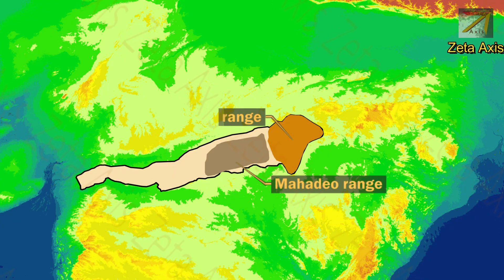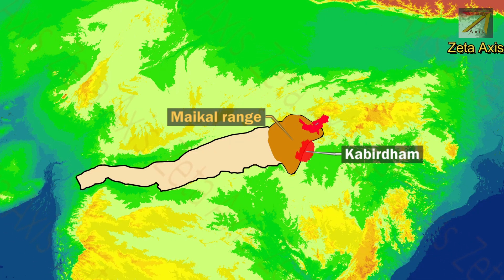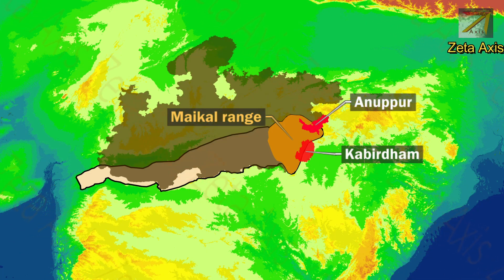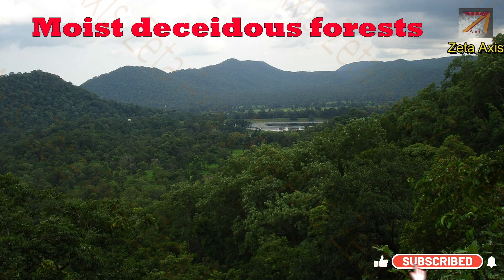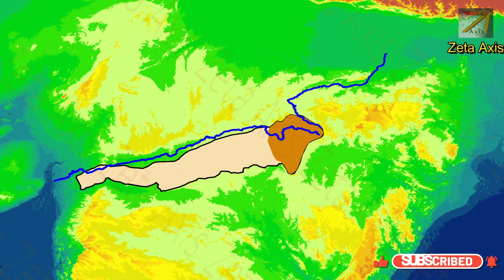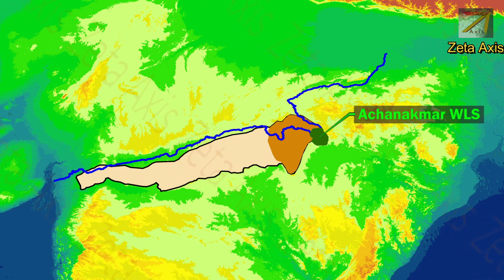The next important sub-range of Satpura mountains is Maikal hills, which form the easternmost part of Satpura ranges. The Maikal hills mainly run through Kabirdham district of Chhattisgarh and Anuppur district of Madhya Pradesh. The Son river and Narmada river originate from the Maikal range. Due to ample rainfall, the Maikal range has moist deciduous forests forming dense forests in the region. The Achanakmar Wildlife Sanctuary of Chhattisgarh is located in the eastern Maikal range, while Melghat Tiger Reserve of Maharashtra is located in the western Maikal range.